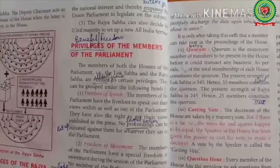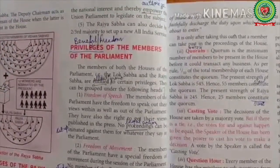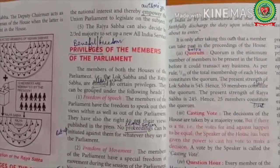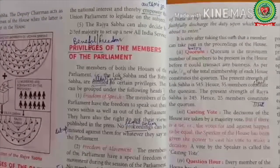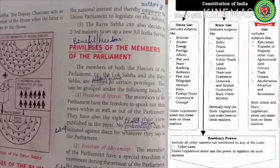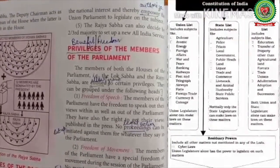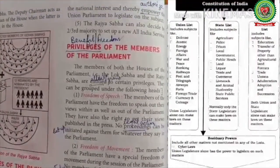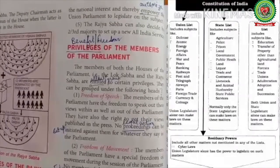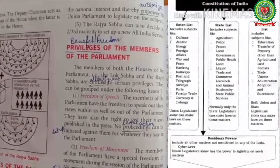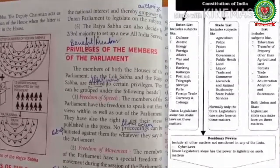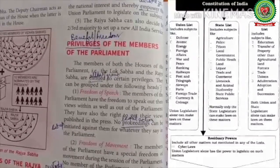The Constitution of India has provided for a division of powers between the central and state governments. Under the Seventh Schedule, there are three lists: the Union List, the State List, and the Concurrent List. The Union List has a range of subjects under which the parliament may make laws — this includes defence, foreign affairs, railways, banking, etc.